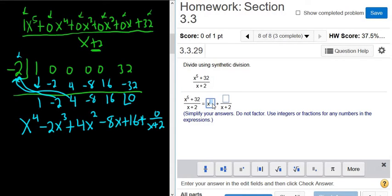So it should be x to the 4th minus 2x cubed plus 4x squared minus 8x plus 16.